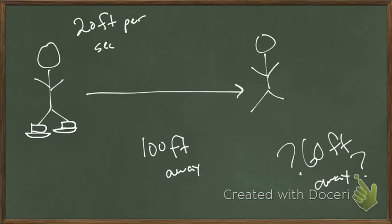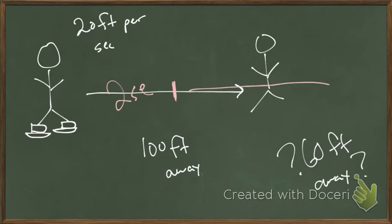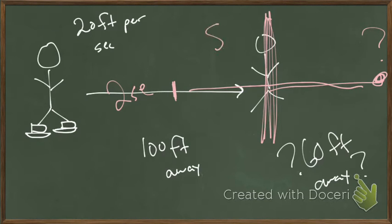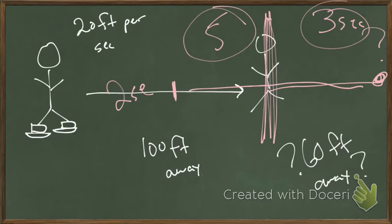Leah's talking about two possible answers. At 20 feet per second, if you want to be 60 feet away, you'd have to go 40 feet, which would be two seconds — but you'd skate right through this person. There's also 60 feet in the other direction. How long does it take to go 100 feet? Five seconds. Then you need to go 60 more feet — three more seconds — for a total of eight seconds. So two answers: two seconds and eight seconds.